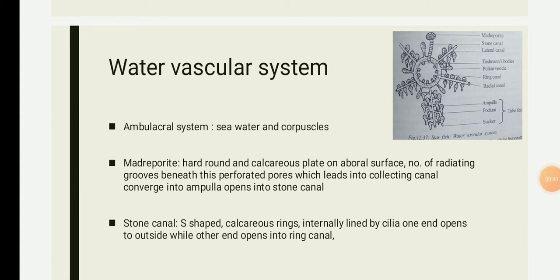The water vascular system in Echinodermata is also known as the ambulacral system. It is peculiar to the echinoderms only, and this type of water vascular system is restricted to echinoderms and is not present in any other animal group. In our last semester we studied a water vascular system in Porifera, which was a different type of canal system. Similarly, echinoderms have a water vascular system, but here it is very well developed compared to Porifera.